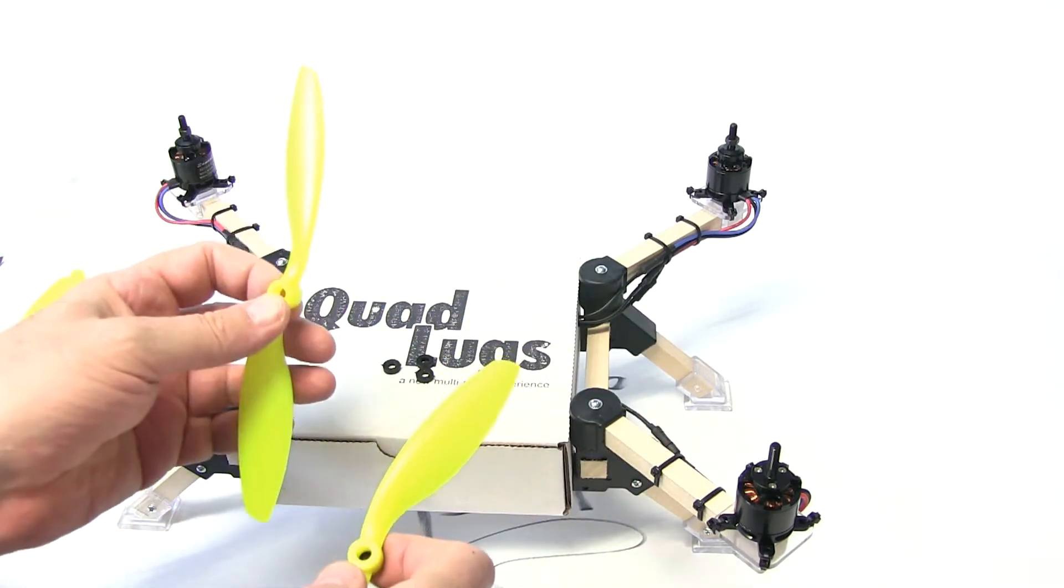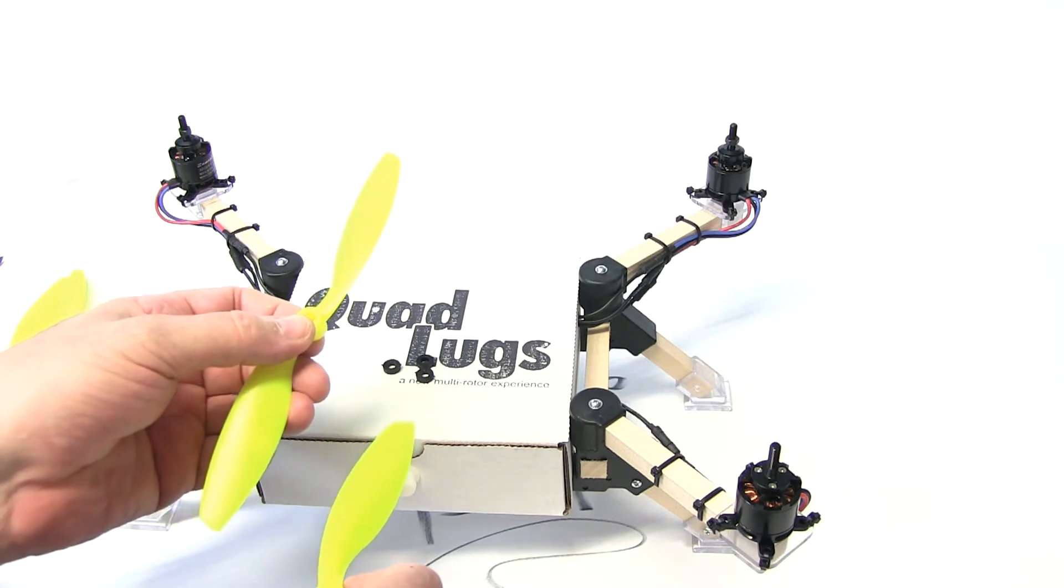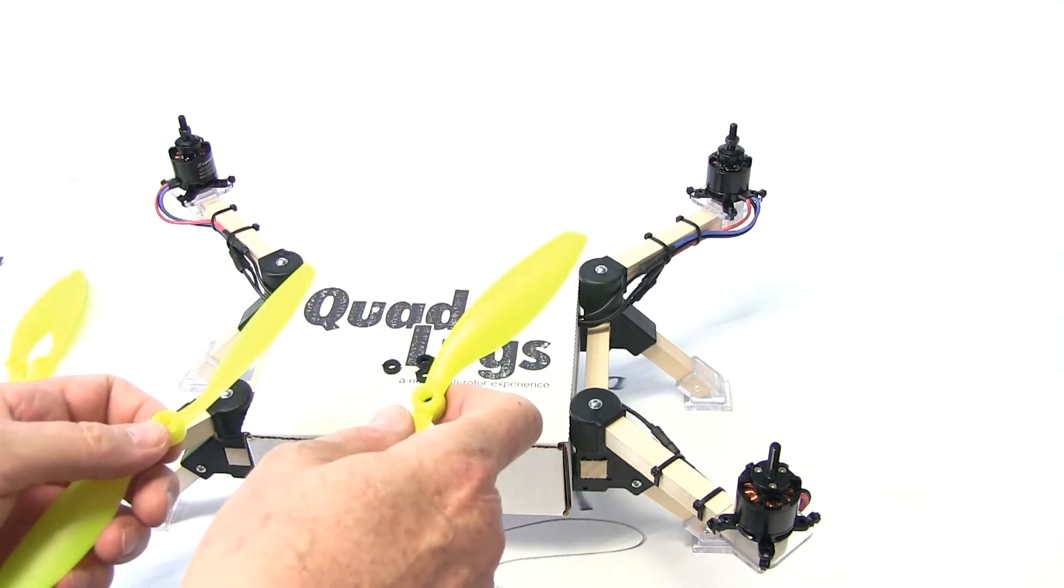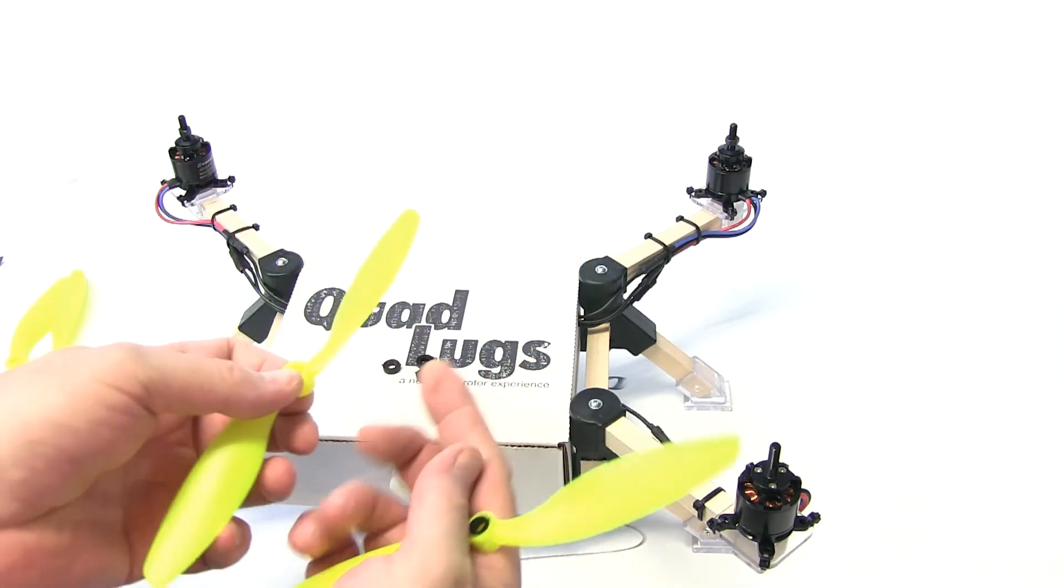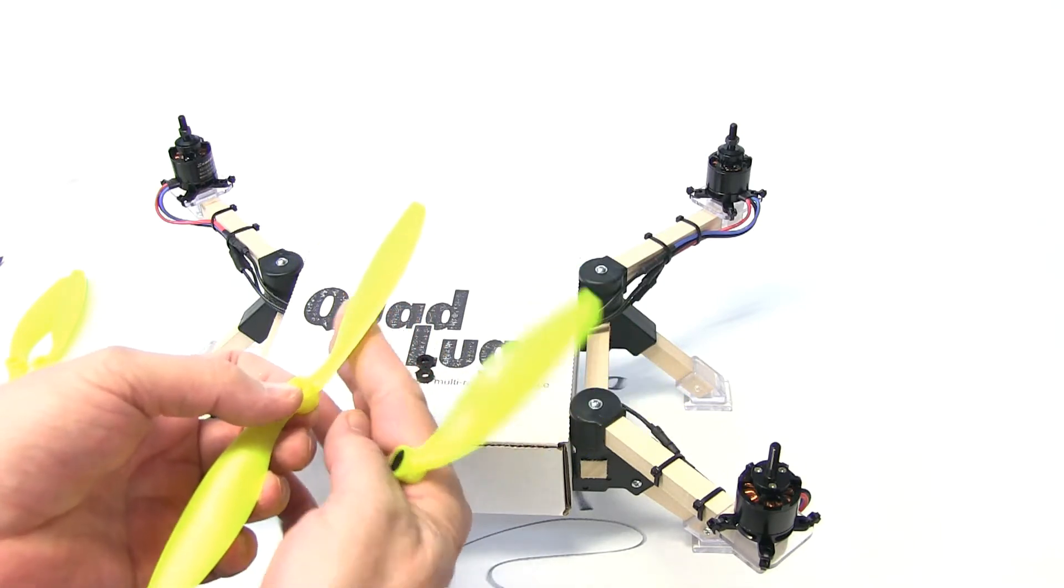R will be clockwise, L will be counterclockwise. You can also tell how it's cut as to the direction it should be going to push the air down.